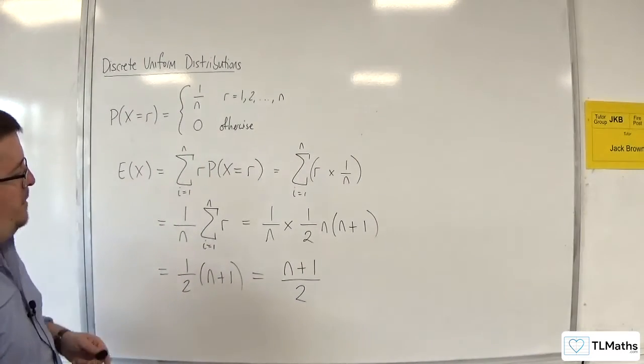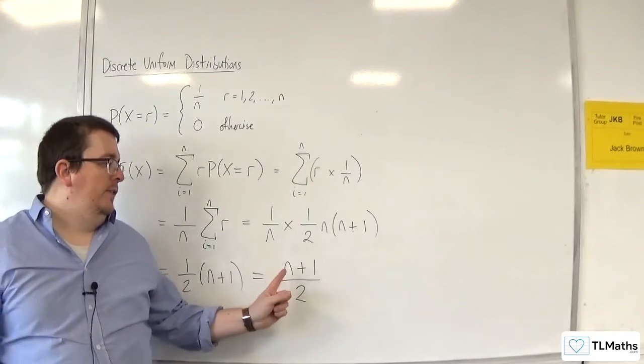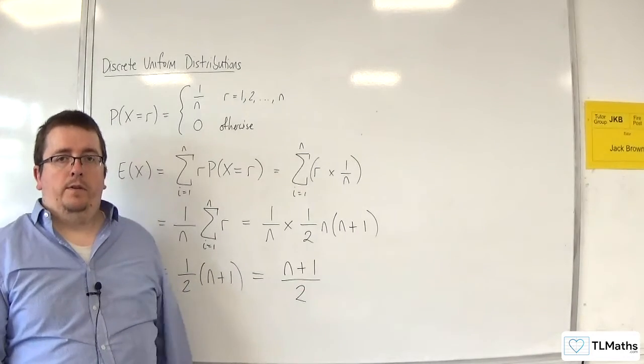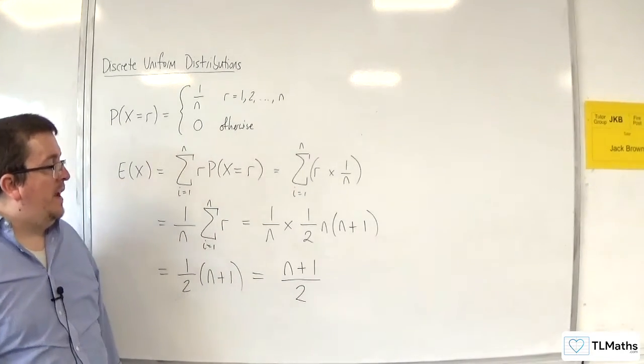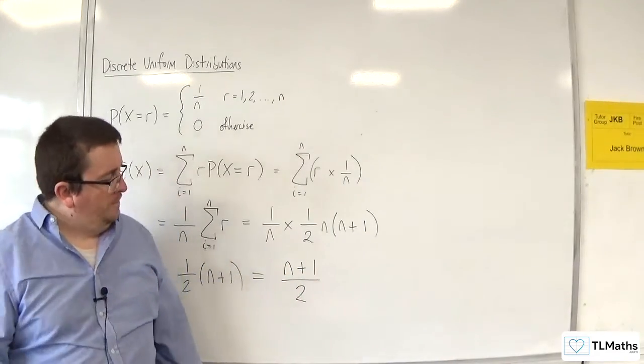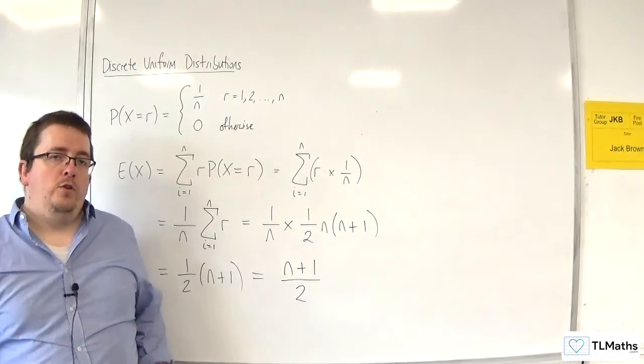So, it might be as you kind of expect, the fact that it is essentially the formula for finding the median, the middle value. Because all the probabilities are going to be the same for each of your values in your distribution, it should just be the middle value that you're looking for.